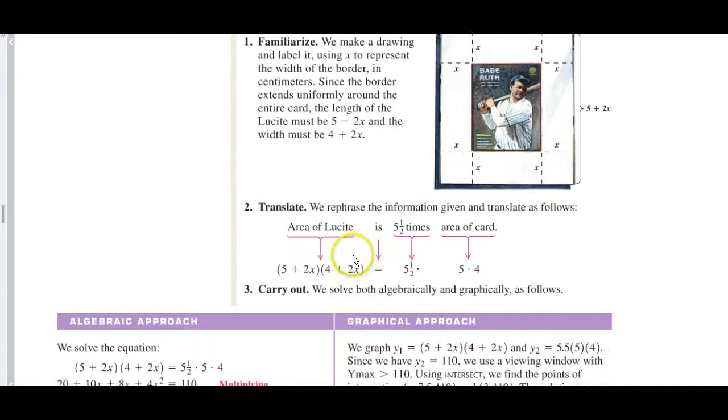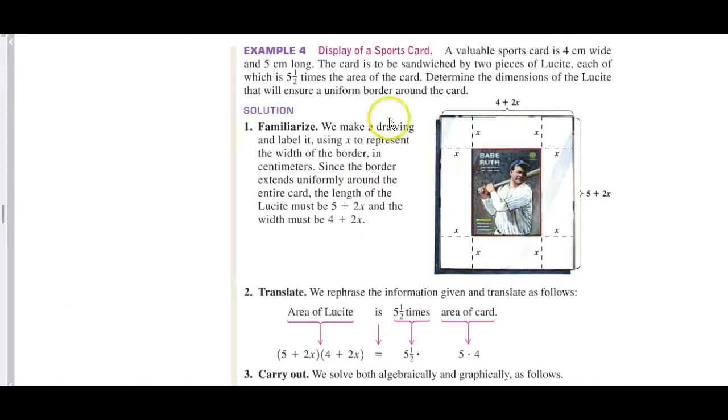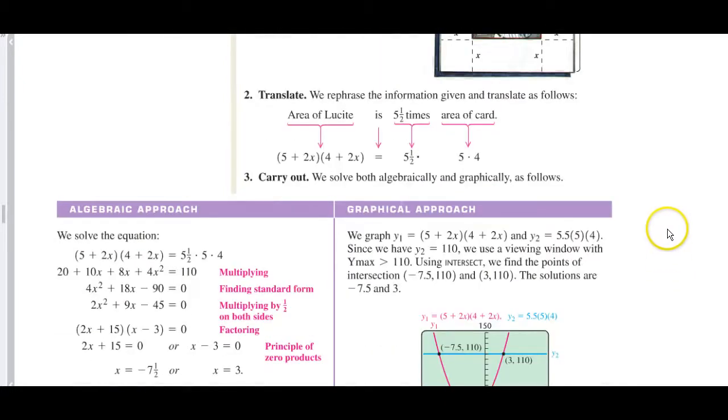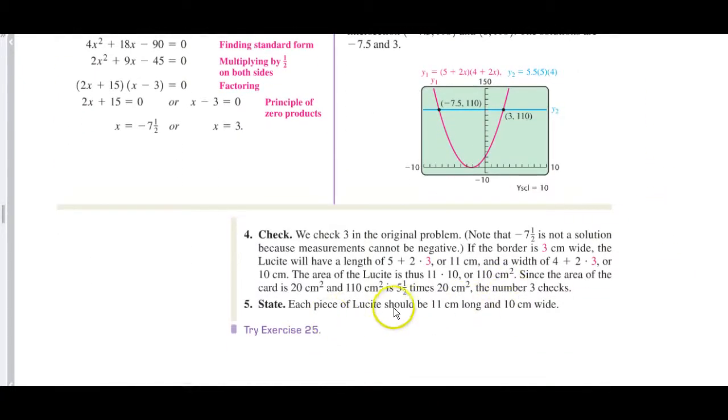So this is our answer. And again, that only tells you what X is. So X is going to be 3, and these are all 3s over here. So the lucite then, and our X is 3, is going to be 2 × 3 is 6, this is going to be 10 centimeters. And this one is going to be 2 × 3 is 6, 11 centimeters. This one over here is 11 centimeters, this one is 10. All right, wow, that was a long one. And there was lots of stuff going on there. And the lucite should be 10 centimeters wide by 11 centimeters long.